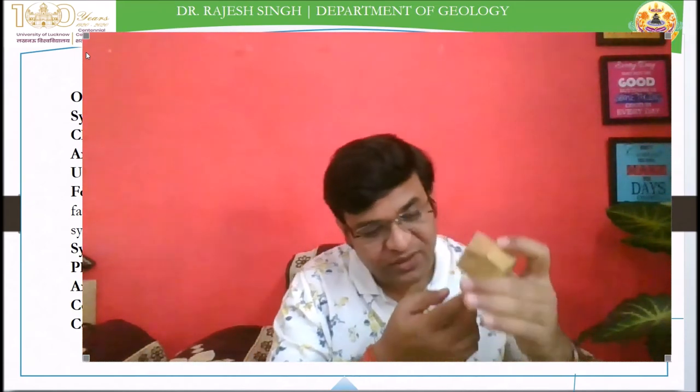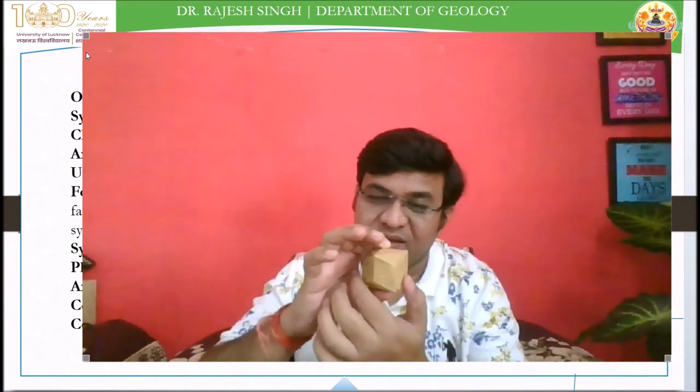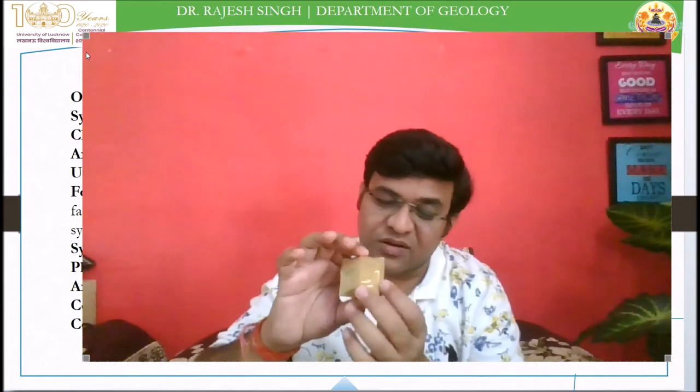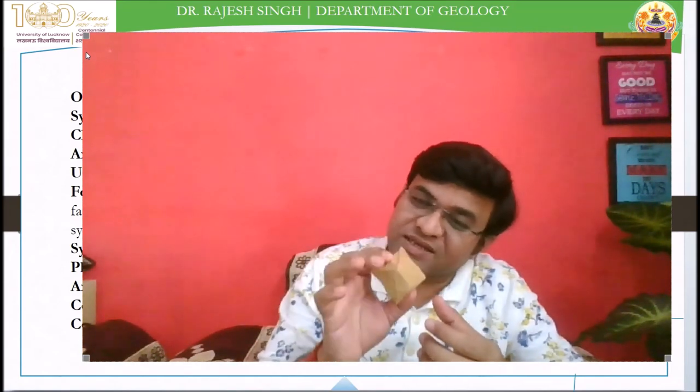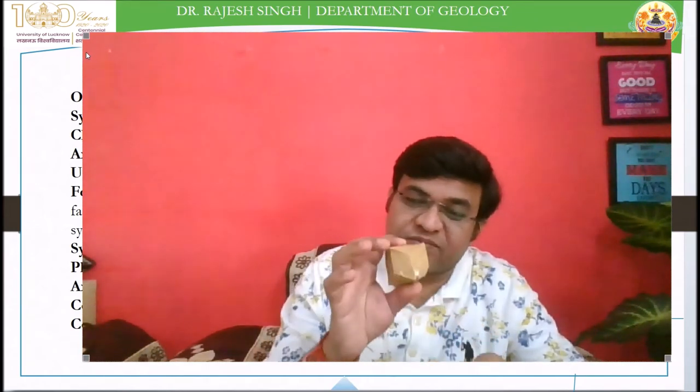Likewise, if you hold it so that three raised edges are meeting, hold the opposite direction as well and rotate it — you will get three-fold symmetry. Such points are eight in total. Since an axis line passes through two points, you will get four axes showing three-fold symmetry.